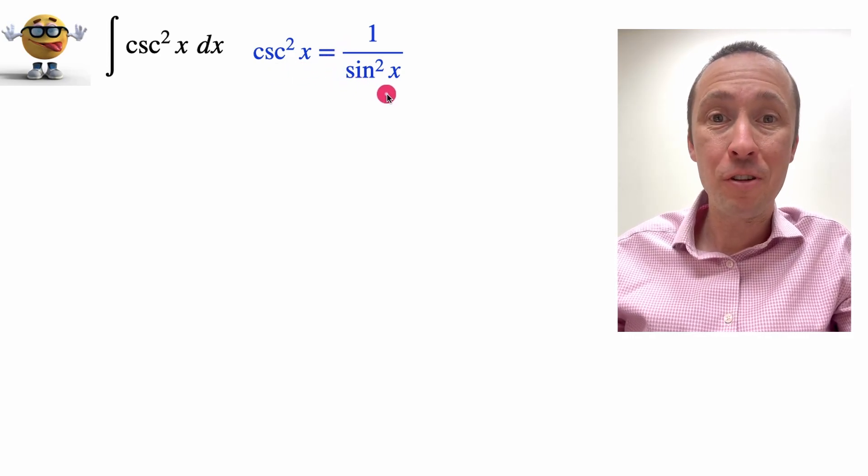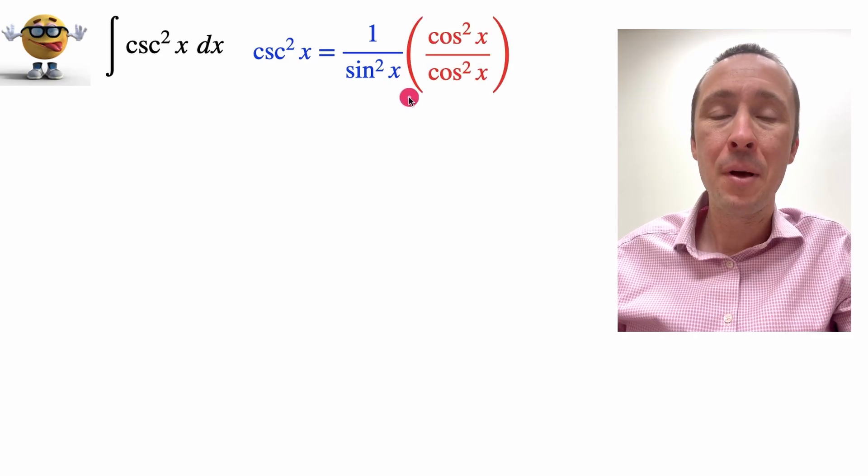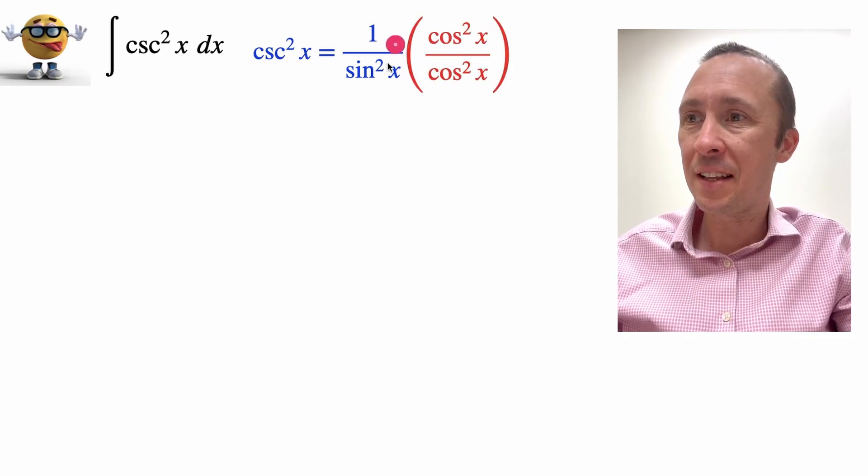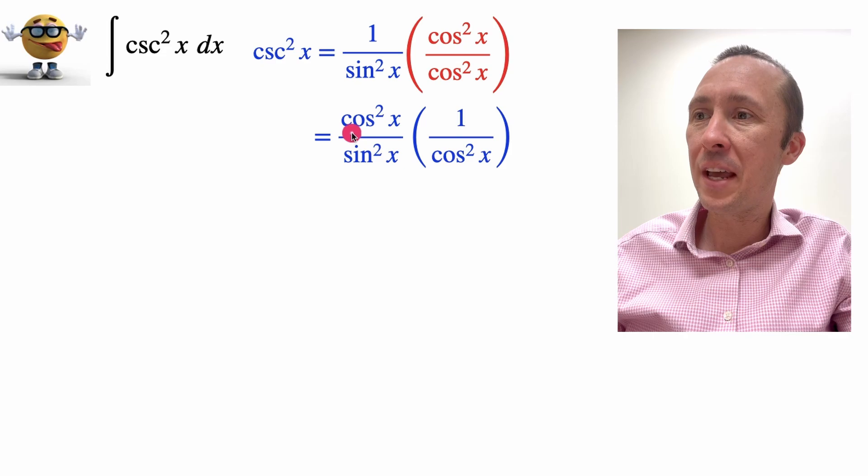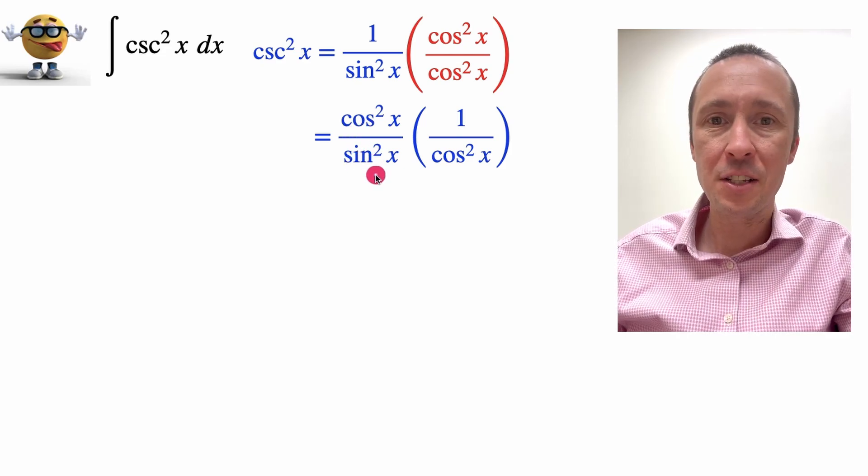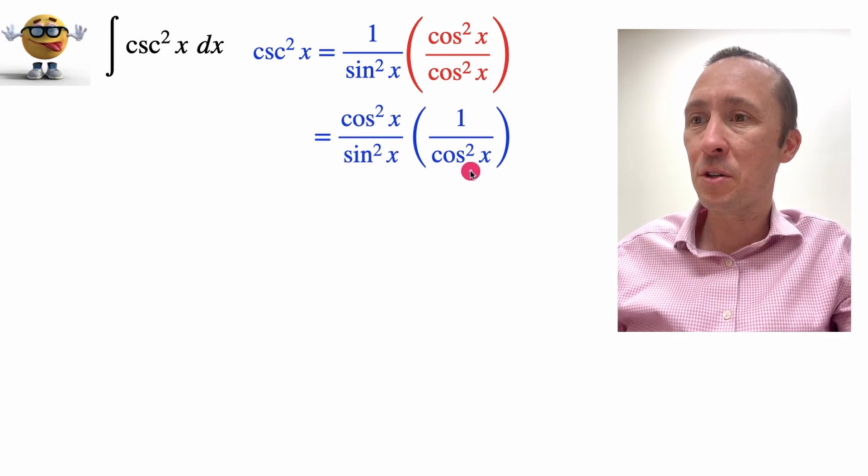Now we're going to do a little trick. We're going to multiply the top and bottom by cosecant squared x. You can do that, that doesn't change anything. And if we rearrange, we get cosecant squared x divided by sine squared x times 1 divided by cosecant squared x.